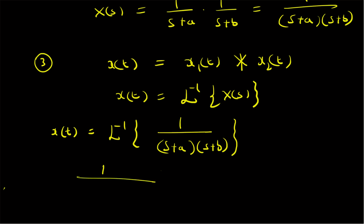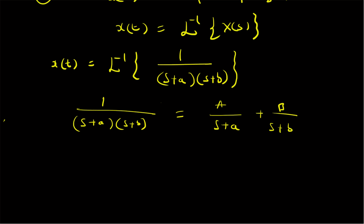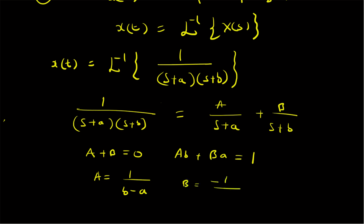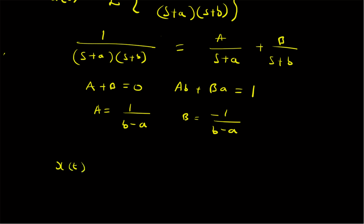The next step is to rewrite the function 1/[(s + a)(s + b)], which is a ratio of polynomials, using partial fractions. It is written as A/(s + a) + B/(s + b). We can find the values of A and B by comparing coefficients. Comparing coefficients of s on both sides gives A + B = 0. Comparing the constant terms gives A·b + B·a = 1. Solving these two equations gives A = 1/(b - a).